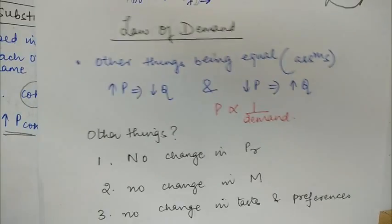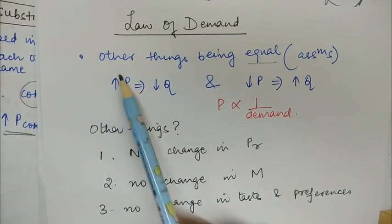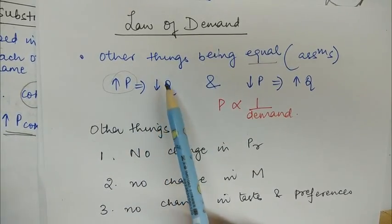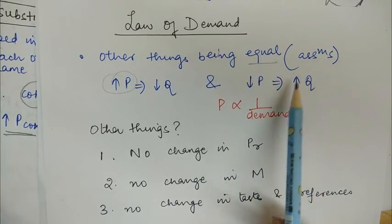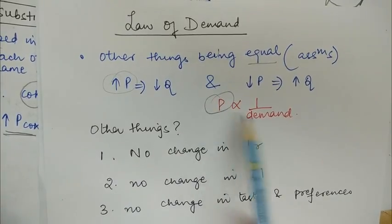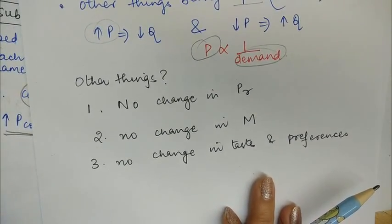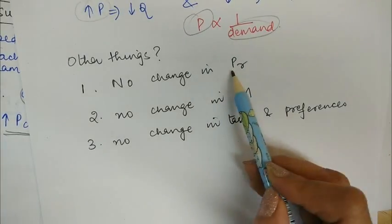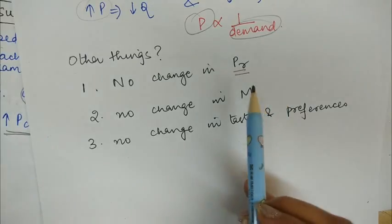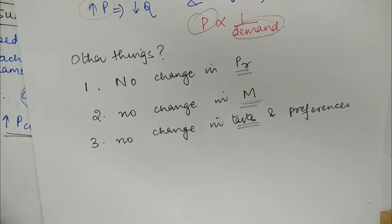The law of demand states that, other things being the same, if the price of a commodity increases, the demand for that commodity contracts. And with a fall in the price, the demand expands. In other words, price and demand are inversely related. The 'other things being the same' refers to assumptions: no change in the price of related goods, no change in the income of the consumer, and no change in the tastes and preferences of the consumer.